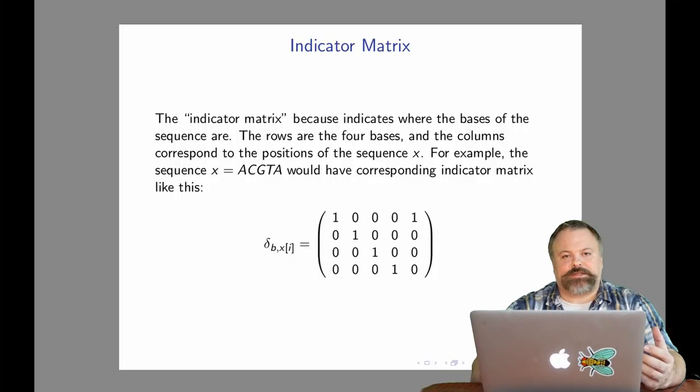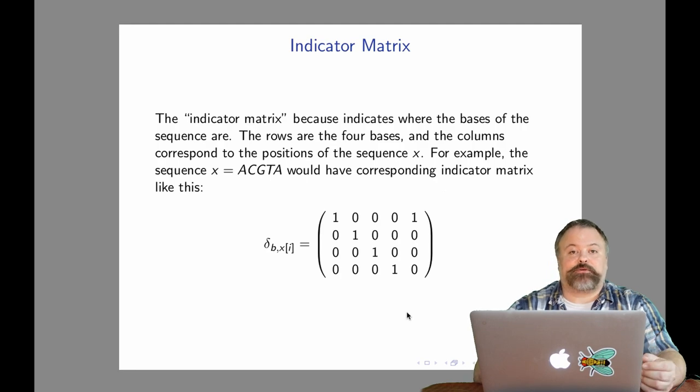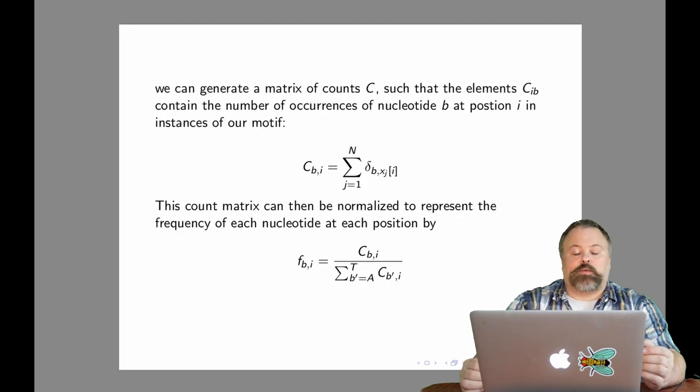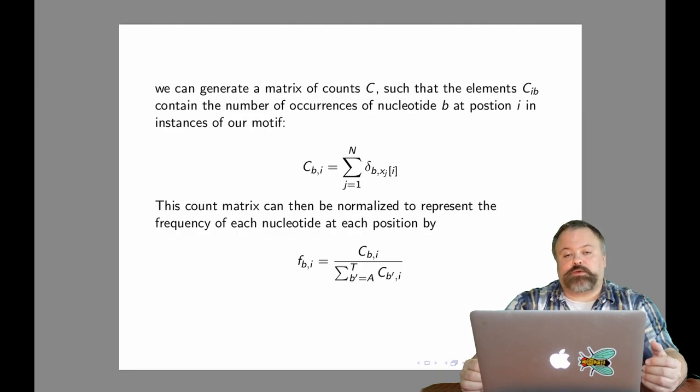While the representation may look a little scary, in this example, ACGTA, we just have this kind of matrix representation right here. But what we want to do is generate a matrix of counts, C sub bi. This would be defined similar to our indicator matrix where the rows correspond to the four bases and the columns correspond to our positions. We're essentially summing up all these different indicator matrices to get one accumulative count matrix.